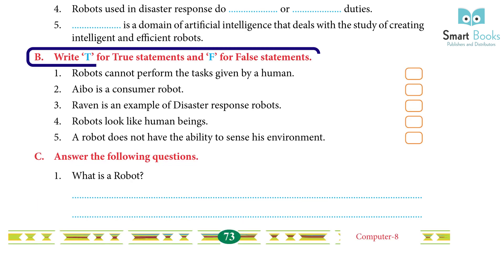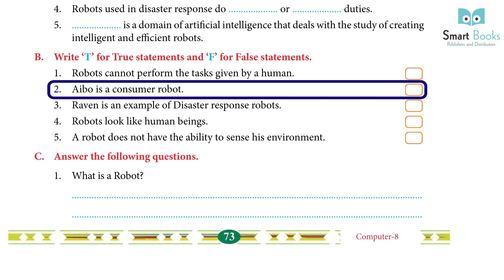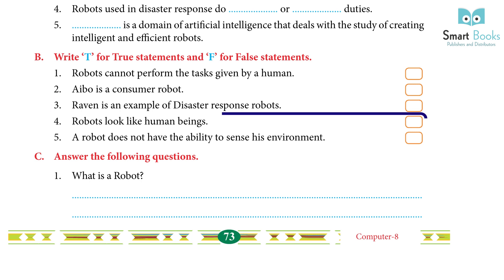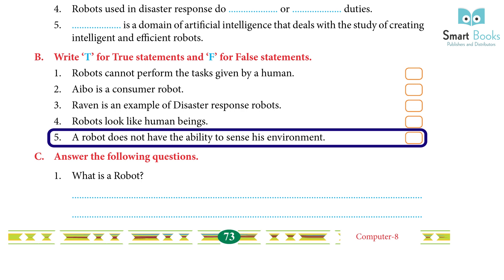True or False statements: 1. Robots cannot perform the task given by humans — False. 2. Aibo is a consumer robot — True. 3. Raven is an example of a disaster response robot — False. 4. Robots look like human beings — True. 5. A robot does not have the ability to sense its environment — False.